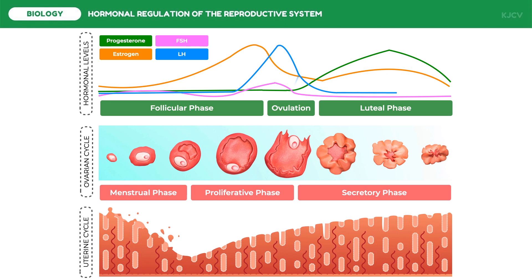The corpus luteum degenerates in about two weeks if the released ovum has not been fertilized and implanted in the uterus. Progesterone and estrogen levels sharply decrease when the corpus luteum degenerates, removing the inhibitory influences on FSH and LH. As these anterior pituitary hormone levels start to rise again, they stimulate the development of a new batch of follicles, and a new follicular phase begins — just like the start of the cycle.